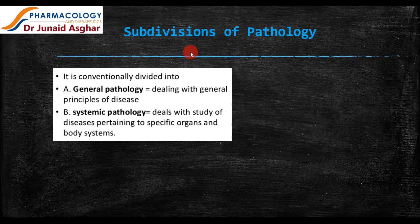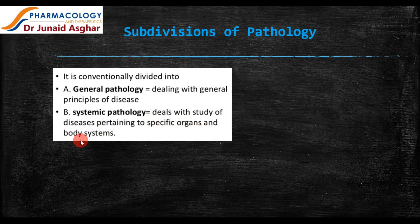What are the subdivisions of pathology? It is conventionally divided into general pathology, which deals with the general principles of disease, and systemic pathology, which deals with the study of diseases pertaining to specific organs and body systems. General pathology focuses on the general principles involved in a disease, while systemic pathology explains different diseases and their detailed pathologies.